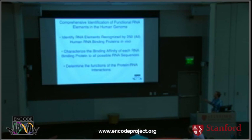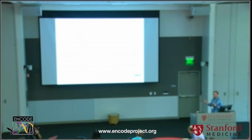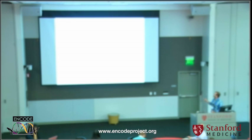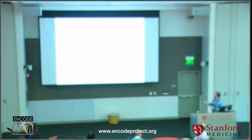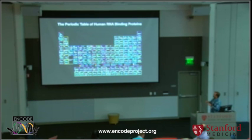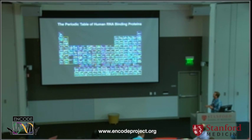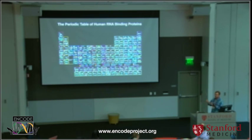The goal of the project we're engaged in is to comprehensively identify the elements in the human genome that are recognized by these RNA binding proteins. In the current phase, our goal is to do this for 250 different RNA binding proteins, and eventually we would like to get to doing all of them. We also want to characterize the binding affinity of each protein to all possible RNA sequences, and then determine the functions of these protein-RNA interactions. We think of this conceptually as developing something like a periodic table for human RNA binding proteins, where for each protein we'll have the same sets of assays conducted in the same manner, in the same cell types, so that you can directly compare them.